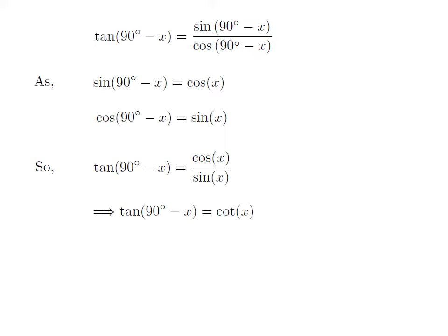As cosine of x divided by sine of x is equal to cotangent of x, tangent of 90 degree minus x is equal to cotangent of x.